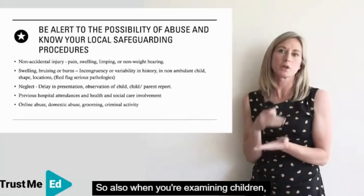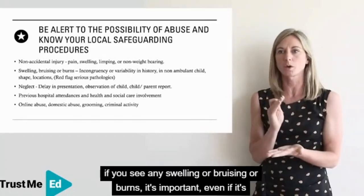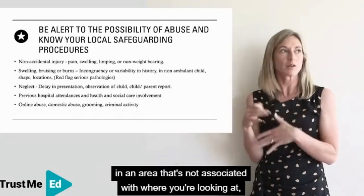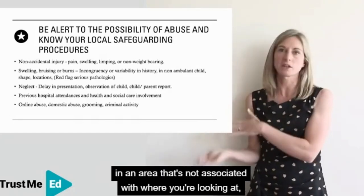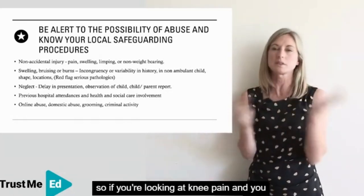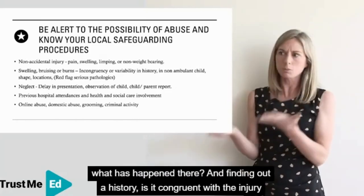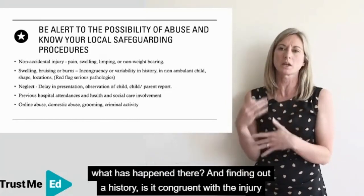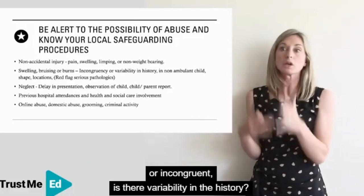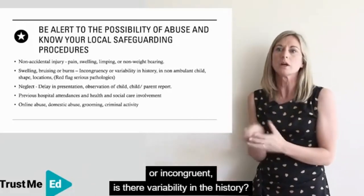When you're examining children, if you see any swelling, bruising, or burns, it's important — even if it's in an area not associated with where you're looking. So if you're looking at knee pain and you see something on an arm, you need to be asking what's happened there, finding out a history, and determining whether it's congruent or incongruent with the injury, and whether there's variability in that history.